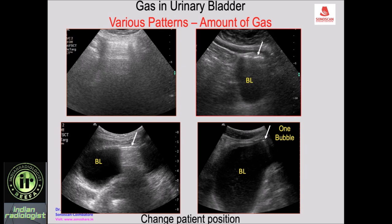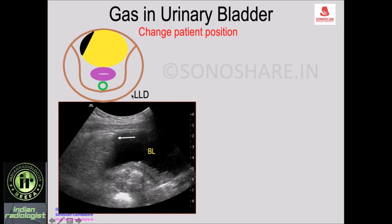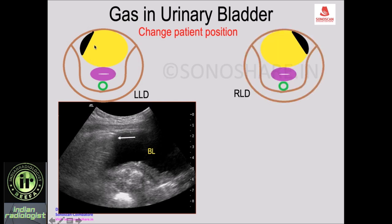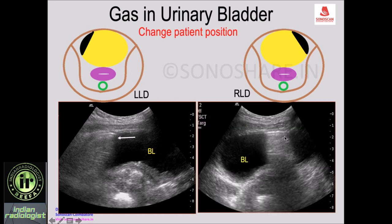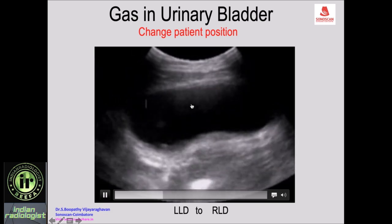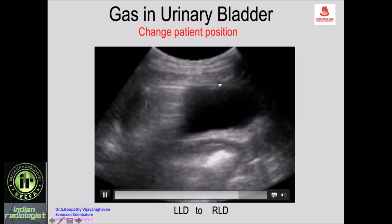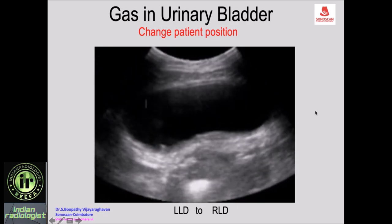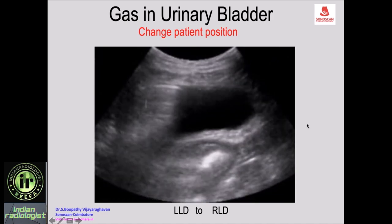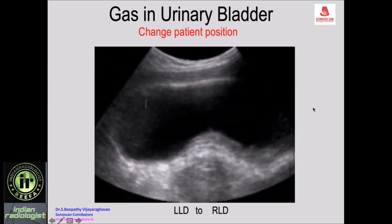Once you have seen this, you can confirm it is gas by changing patient position from right lateral to left lateral decubitus. In left lateral decubitus, the gas in the bladder moves to the right, and on a transverse scan you see the dirty shadow on the right side. When the patient turns to right lateral decubitus, the gas moves to the left side. This shift confirms that the gas is in the lumen of the urinary bladder.